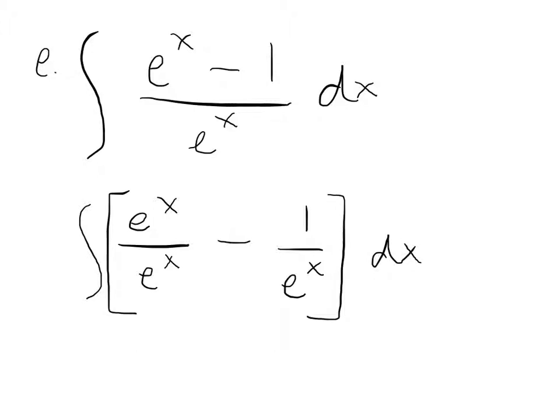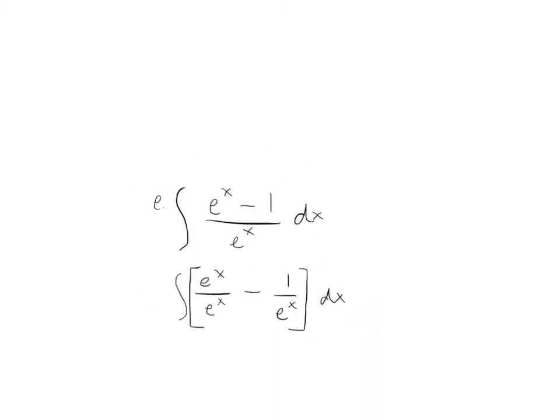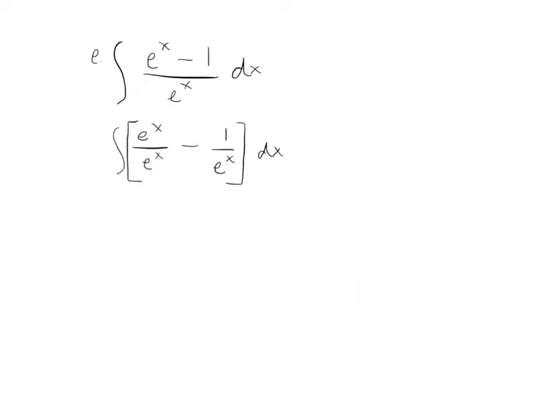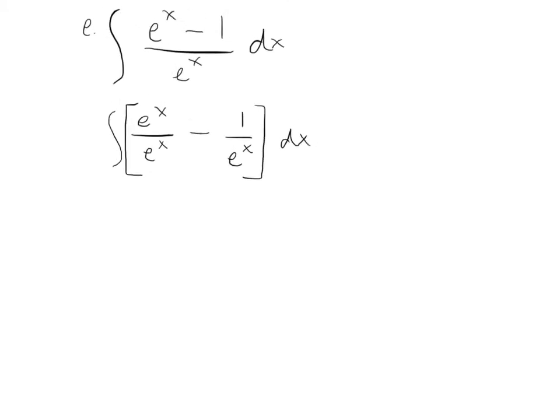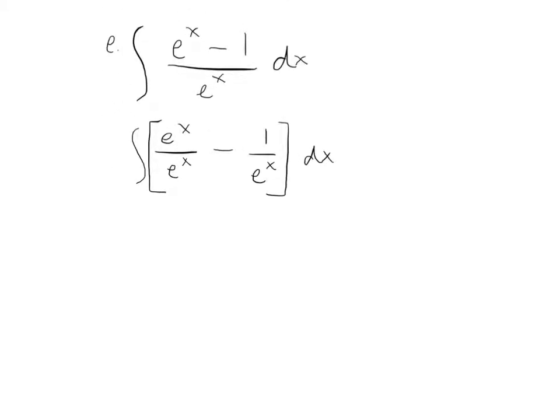So what we're going to do next is we're going to go ahead and split the integral. We're going to go ahead and split up our integral into two parts, because then that will be a lot easier to integrate, because e to the x will cancel down into just one, and we can integrate that pretty simply. So we'll call this the integral of e to the x over e to the x minus the dx. Don't forget your dx when you split your integrals.